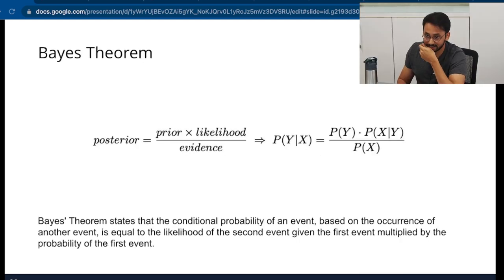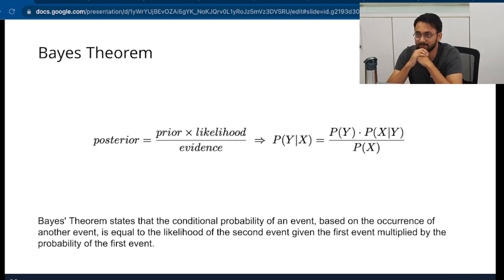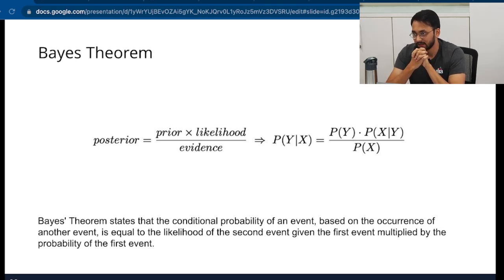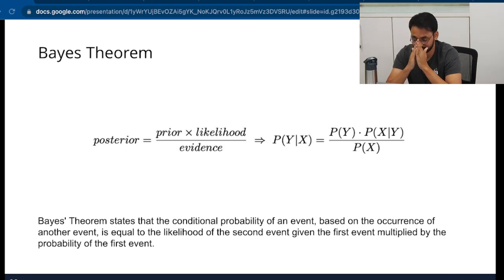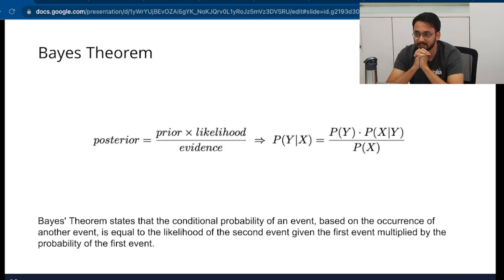The central concept throughout probabilistic ML and Bayesian ML is Bayes' theorem. Without understanding it, inference doesn't make sense, posteriors don't make sense. So let's spend some time on this. How many of you are familiar with Bayes' theorem?